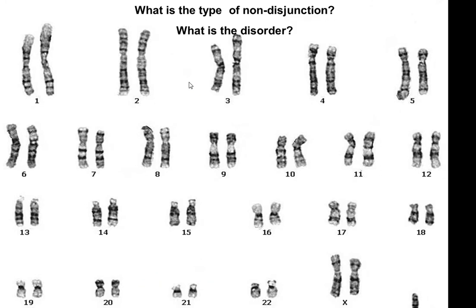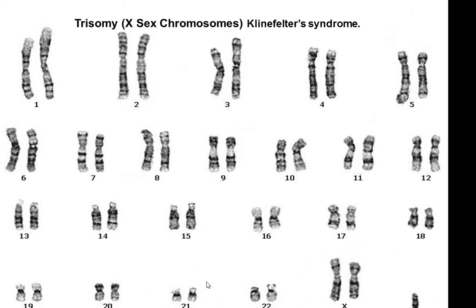What type of non-disjunction is this? Watch the circle — we've got an extra X, so it's XXY. This is called Klinefelter's syndrome. It's referred to as a trisomy of the X chromosome.